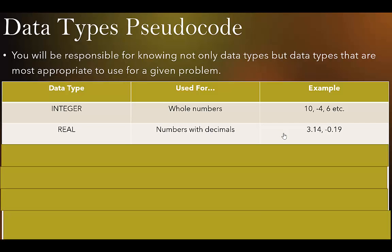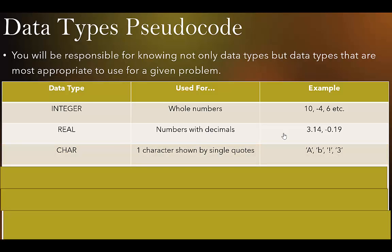Then we have the data type REAL — this is numbers with decimals: 3.14, negative 0.19, 1.0. Then CHAR, which is one character shown by single quotes, and the single quotes are most important. On paper two they'll give you single characters with a single quote — that is a dead giveaway that it's a character. A character can be a letter, a symbol, or a number. The number '3' here is the character 3, not the number 3, so comparing them would return false.